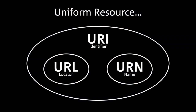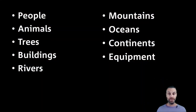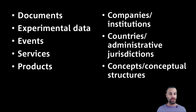The benefit of URLs is that they do precisely what they are. As uniform resource locators, they locate resources in a fashion that is uniform. A resource is circularly defined as anything that can be located or identified — so people, animals, trees, buildings, rivers, mountains, oceans, continents, equipment, etc. Of particular interest to us are information resources and representations of other ephemeral things: documents, experimental data, events, services, products, companies, institutions, countries and other administrative jurisdictions, concepts and conceptual structures, and so on.